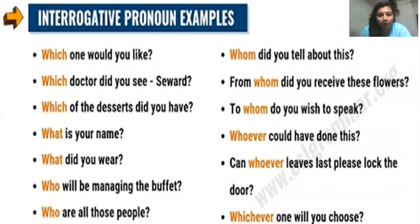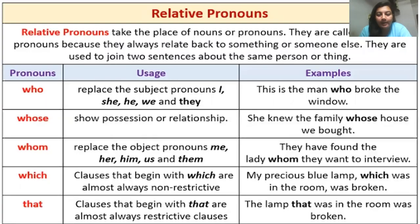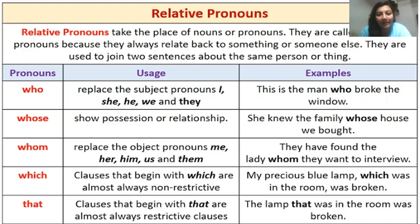Now we will begin with the next kind: relative pronouns. Relative pronouns also take the place of a noun, which is the basic function of any pronoun. It is called 'relative' because its function is to relate back to something or someone being talked about in the sentence. Relative pronouns sometimes also function as conjunctions because they help in joining two sentences about the same person or thing.